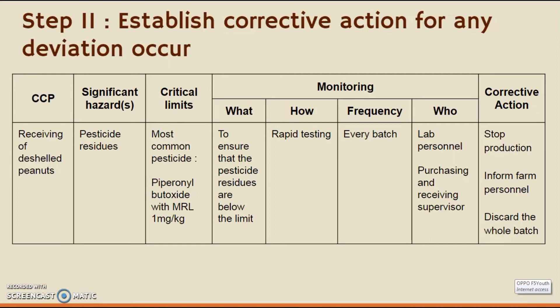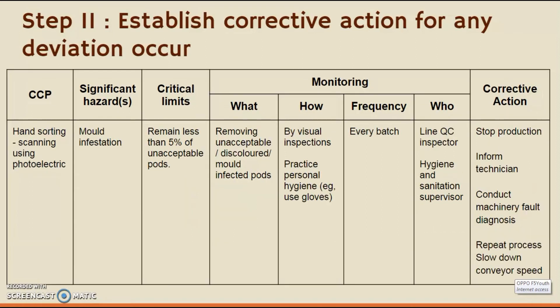Our next CCP is hand sorting. This is significant because mold infestation could lead to the accumulation of aflatoxin in the peanuts. We should only accept less than 5% of unacceptable pods, as small infestations are recognized as discolored pods. We use a photoelectric scanner to scan the peanuts. If there are more than 5% of unacceptable pods, we should stop production, inform the technician, and conduct machinery fault diagnosis. We can also repeat the process and slow down the conveyor speed through the photoelectric scanner.